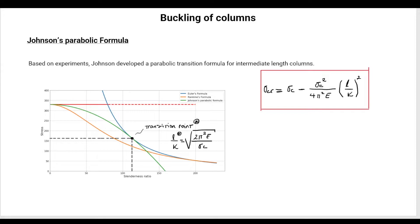When looking at this diagram, we have Euler's formula. When experiments were done to determine where exactly the column is going to fail according to material properties and slenderness, the failure points were found somewhere below Euler's typical formulation and a little bit above Rankine's formulation. So what Johnson did, taking experimental data, was to fit a parabola from the starting point of the yield strength of the material until it was tangent to Euler's formula or curve.